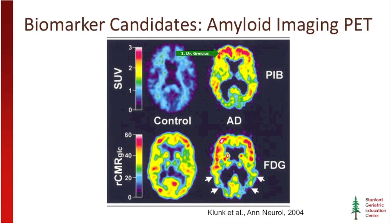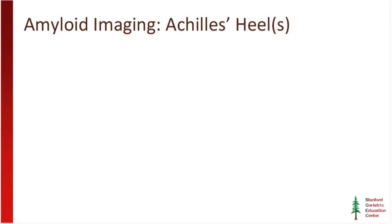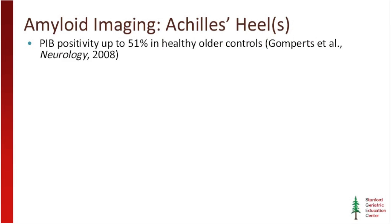The main problem with amyloid imaging is that even in well-screened healthy older controls — 70-year-olds with no subjective complaints and no objective deficits — somewhere between 20 and 50% will have positive amyloid imaging scans; the commonly cited number is around 30%. The two main possibilities are: some healthy older controls can tolerate a degree of amyloid burden without developing Alzheimer's disease, or this measure is so sensitive that it's picking up preclinical Alzheimer's disease — and if you follow these healthy older controls out over time, many of them will likely go on to develop Alzheimer's disease. The jury is still out, though it leans toward the latter possibility.